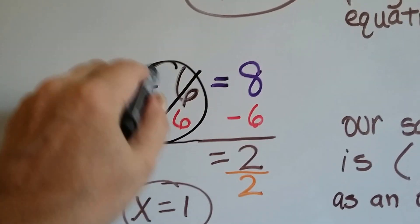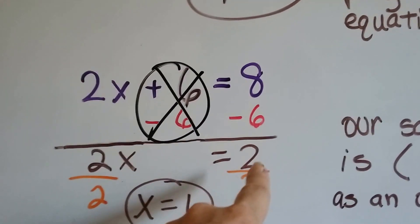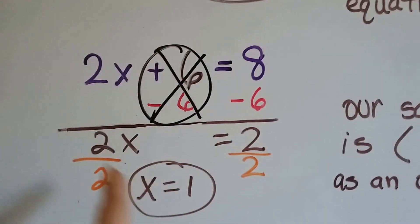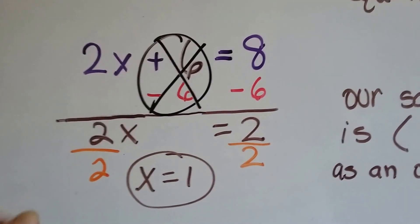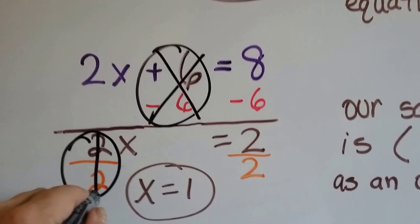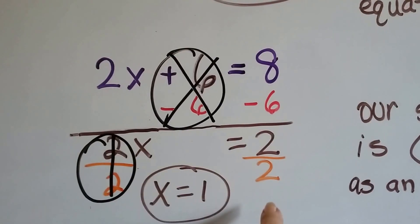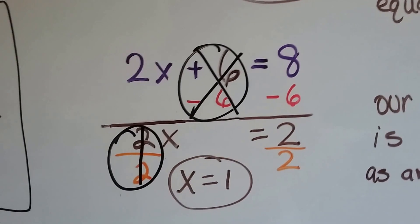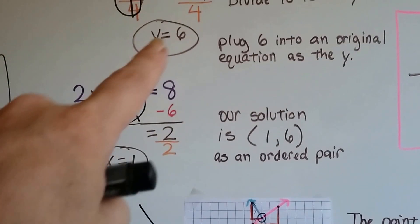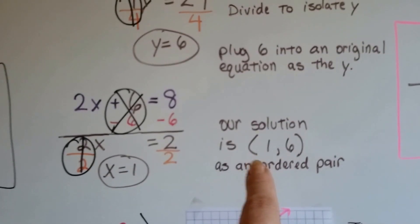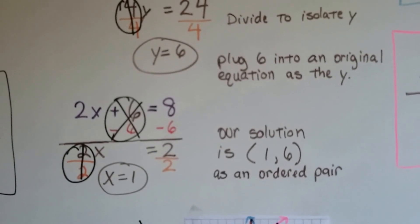So we can now subtract 6 from each side. We're going to isolate the variable. 8 take away 6 is 2. We have 2x equals 2. We divide both sides by 2. We get our buddy the invisible one again. We have x equals 1, because 2 over 2 is 1. So our solution is 1 for x and 6 for y. As an ordered pair, it's 1 comma 6.